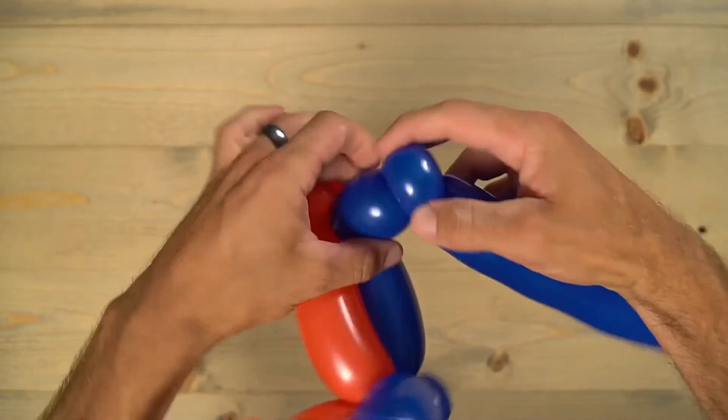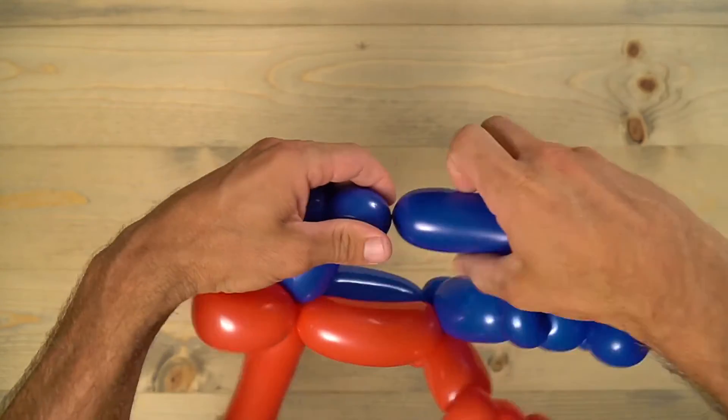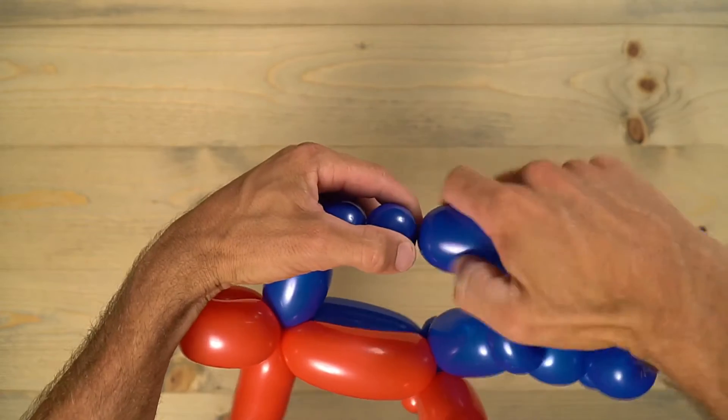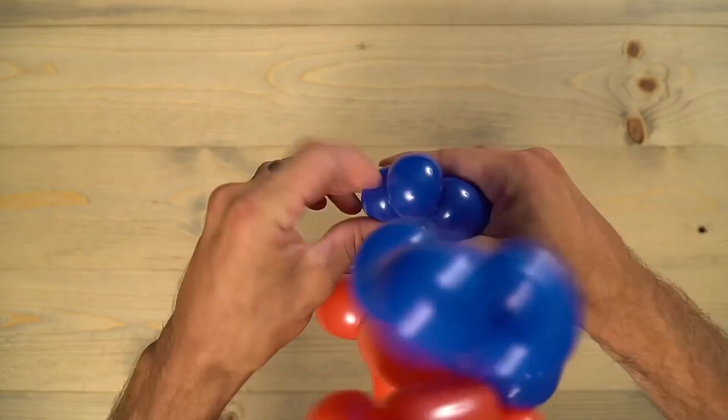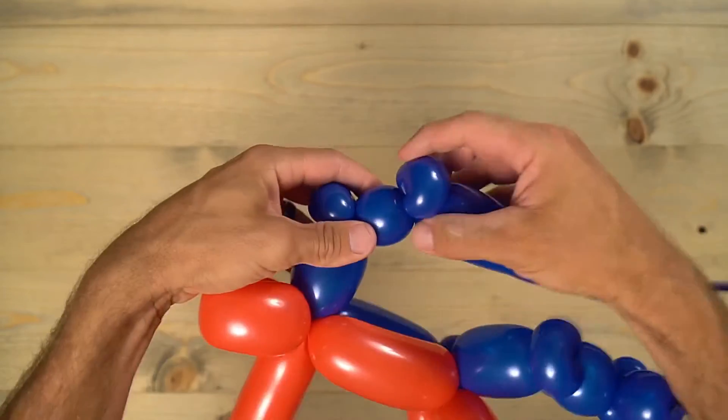I like to make this next section a little smaller than the forearm, or than the upper arm. And then one last small bubble for the pinch twist on the end. And then I'm going to take that extra piece off there.